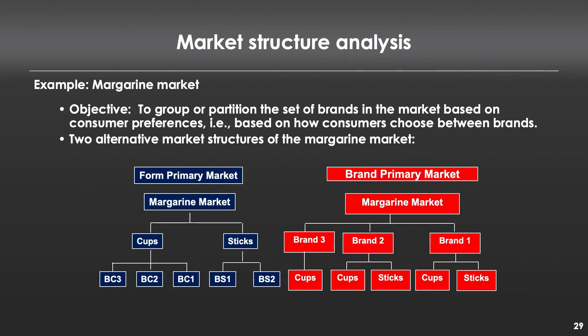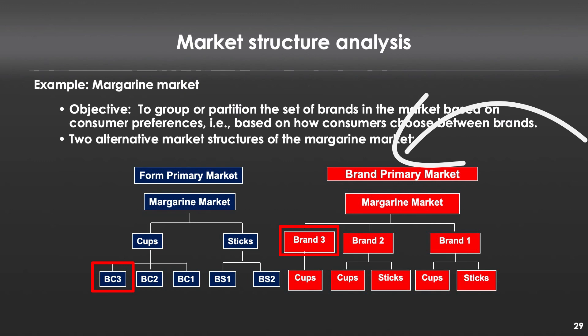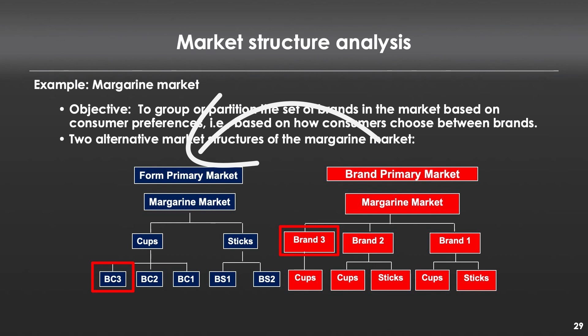In contrast, in a brand primary market, consumers first decide which brand — one, two, or three — and then choose the form factor: cups or sticks. This might seem trivial, but it's important for brand three considering whether to introduce sticks. In a brand primary market, introducing sticks would just cannibalize their own sales, since consumers have already elected to buy brand three products. But in a form primary market, brand three doesn't exist in sticks, so introducing sticks wouldn't risk cannibalization — those consumers weren't even considering brand three when buying sticks.